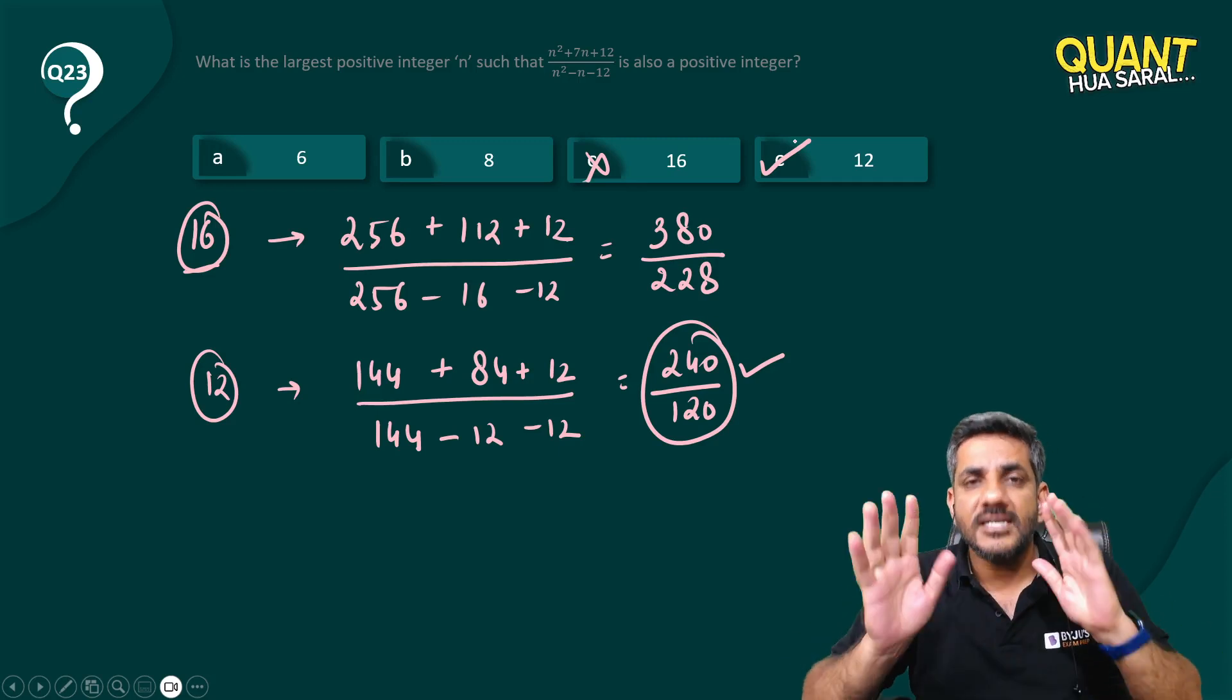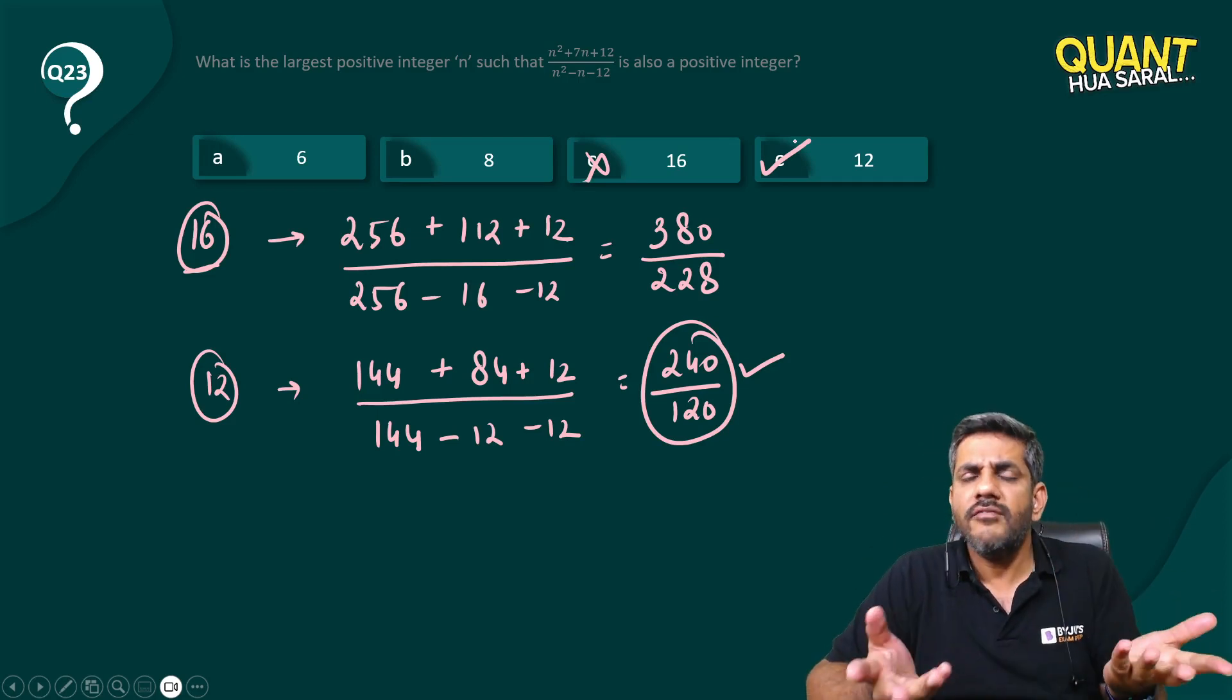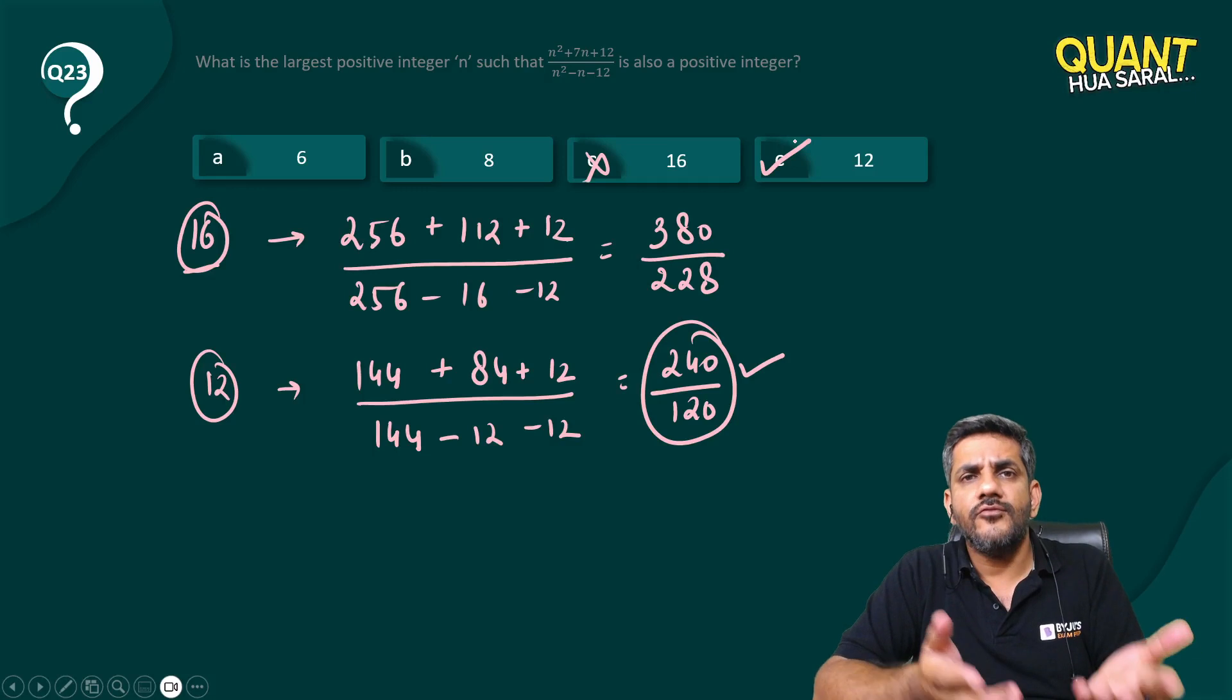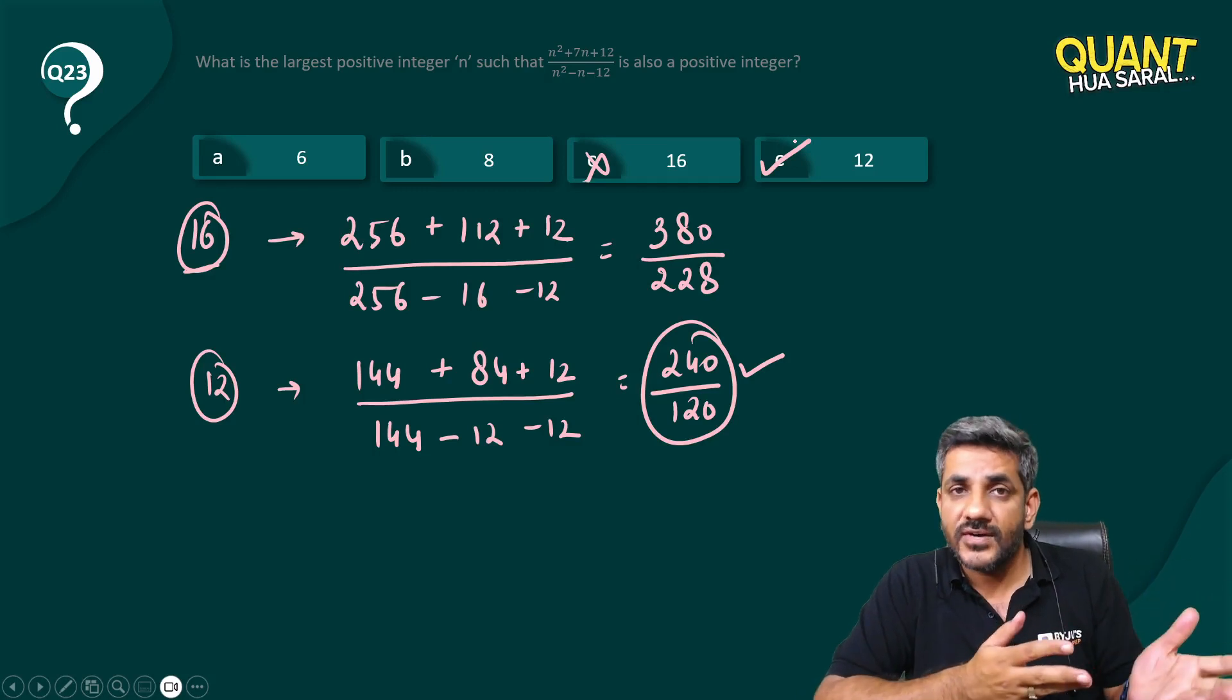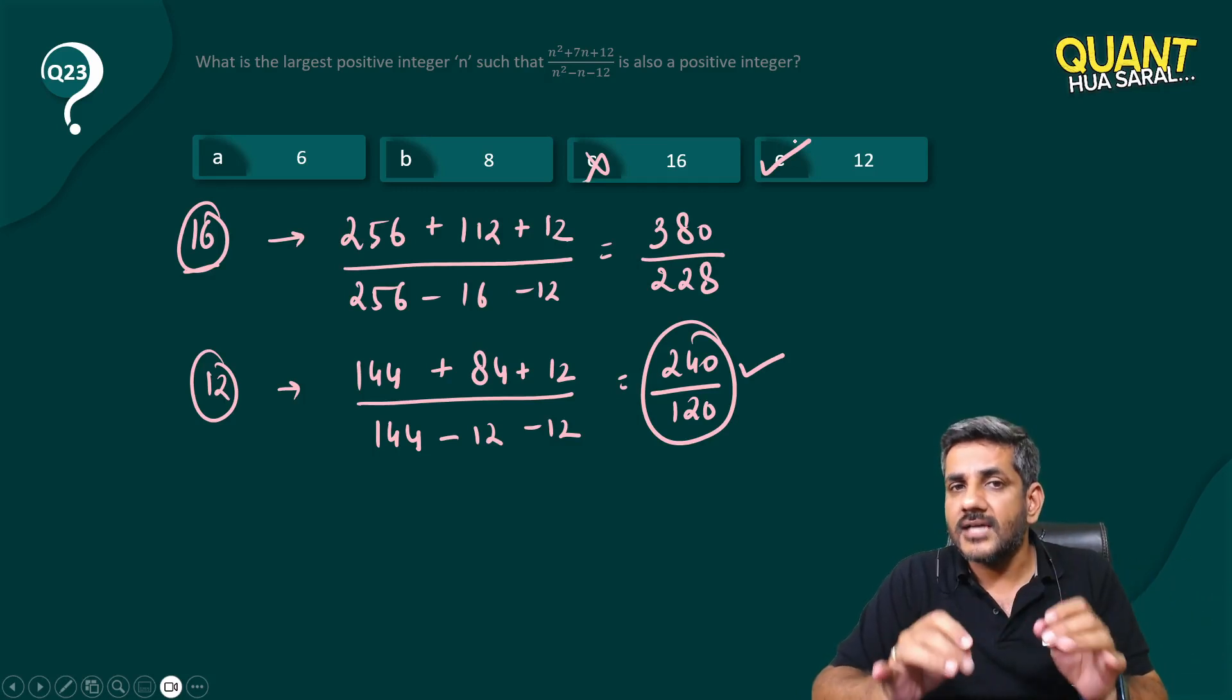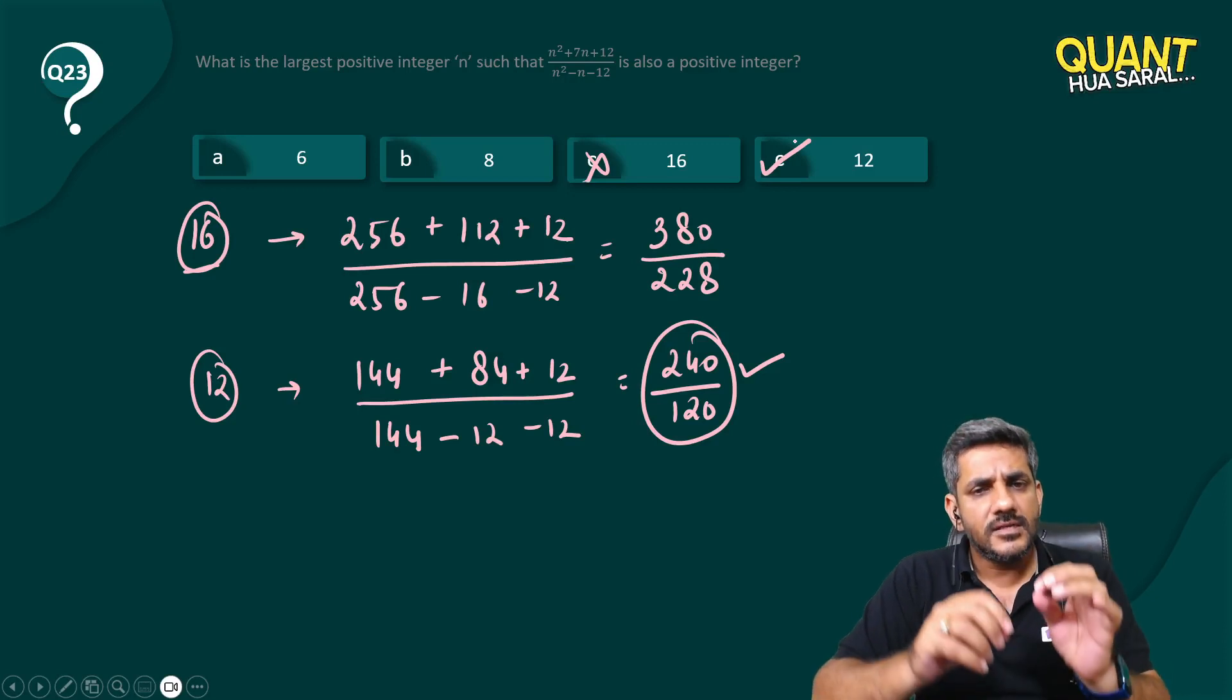Even if 12 did not satisfy, let us say I just had to check 8 more. How difficult was that? 8 square 64 plus 56 plus 12 divided by something. If that satisfies that would have been the answer. If that did not satisfy 6 would have been the answer. In any case I do not think in this question it would have taken more than a minute just to solve it.